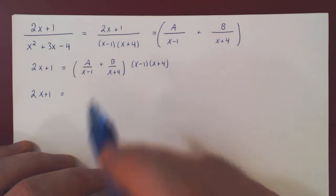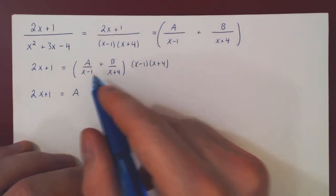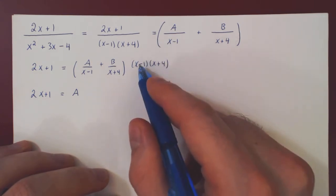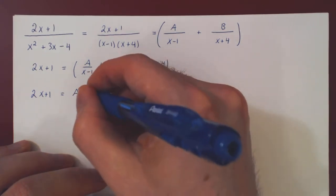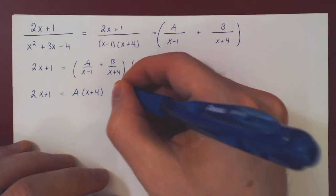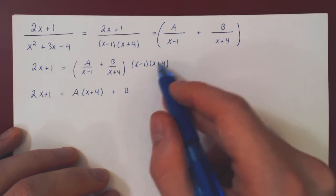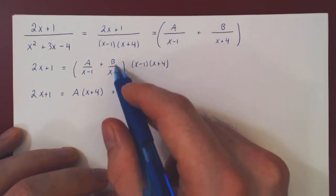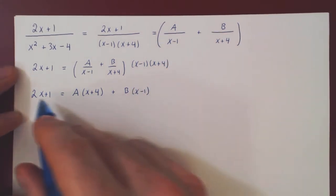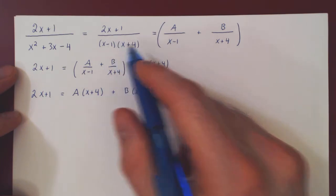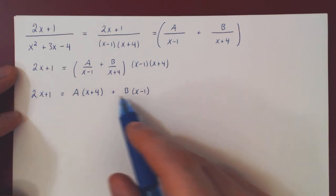If you multiply through, you'll have A over x minus 1 times x minus 1 times x plus 4 — the x minus 1's cancel, leaving A times x plus 4. Then B over x plus 4 times the denominator — the x plus 4's cancel, leaving B times x minus 1. By multiplying both sides by the factored denominator, we now have an equality between two polynomials.